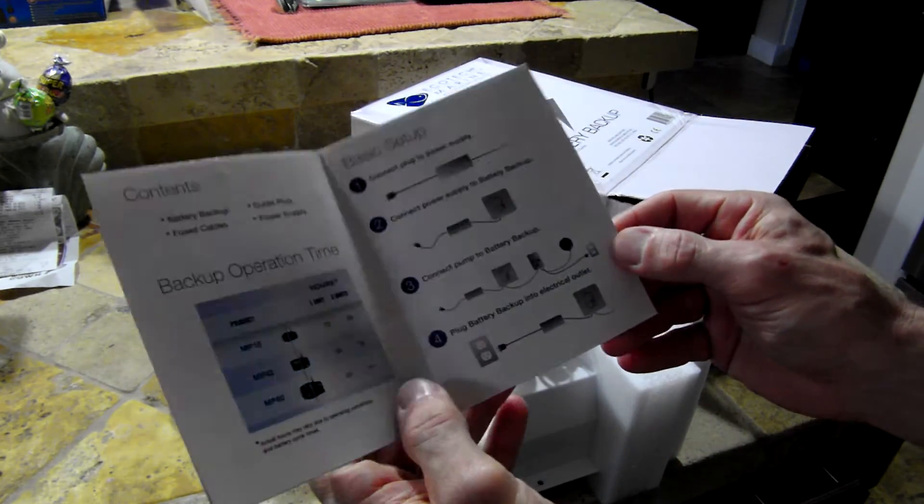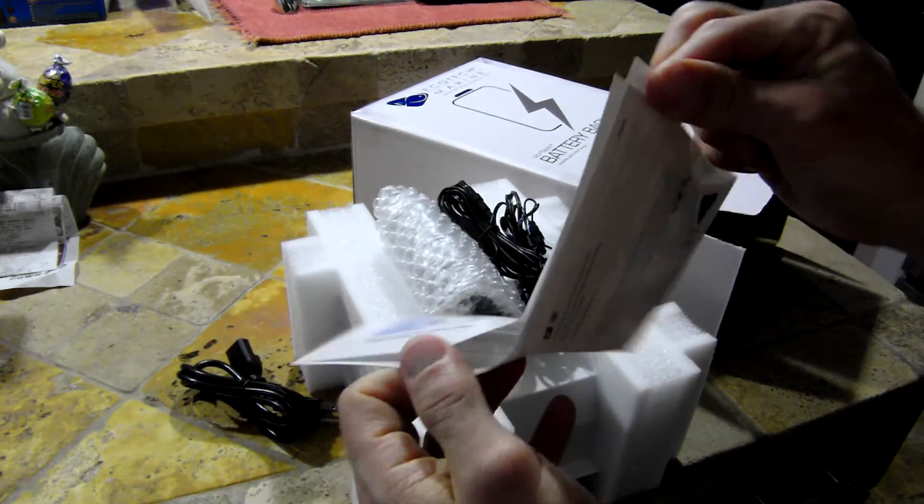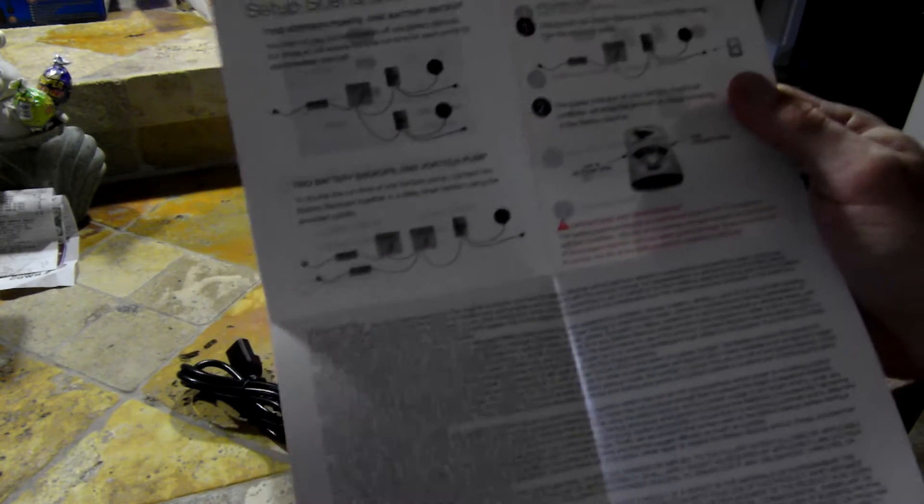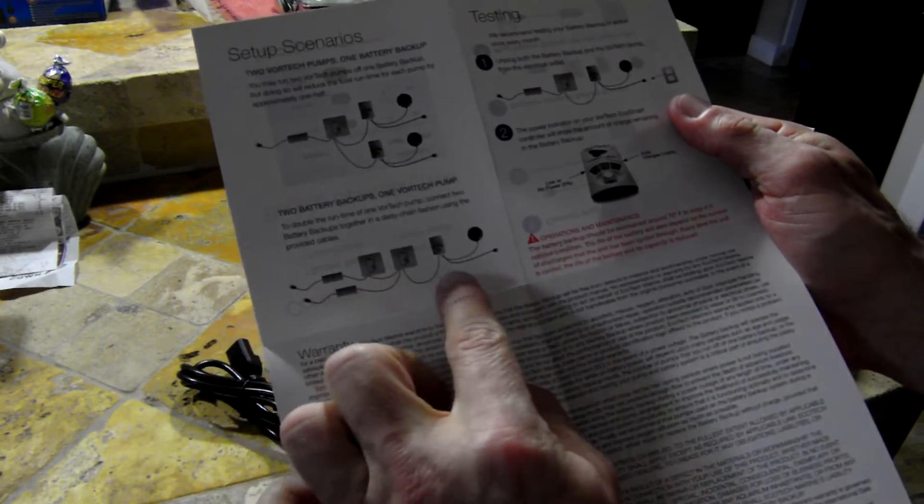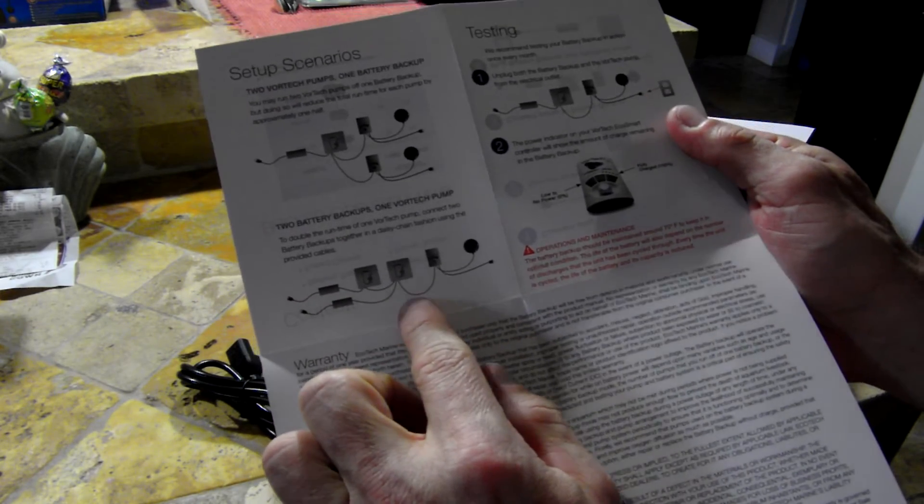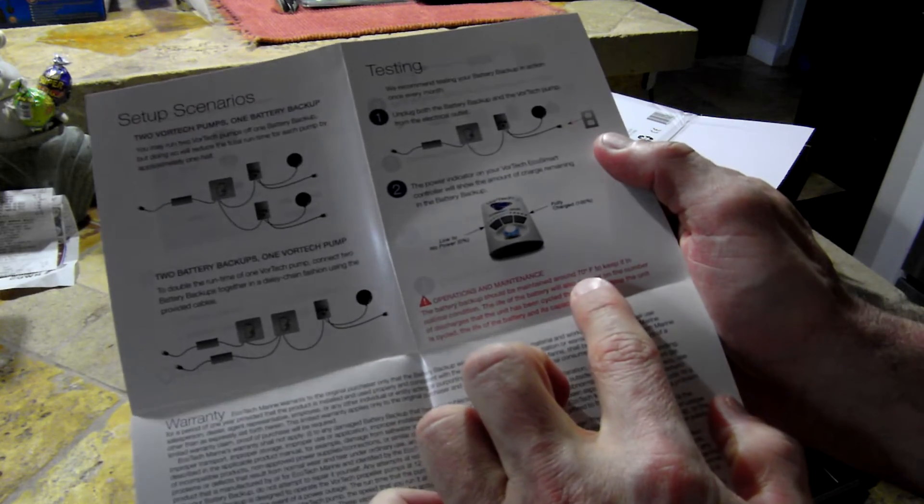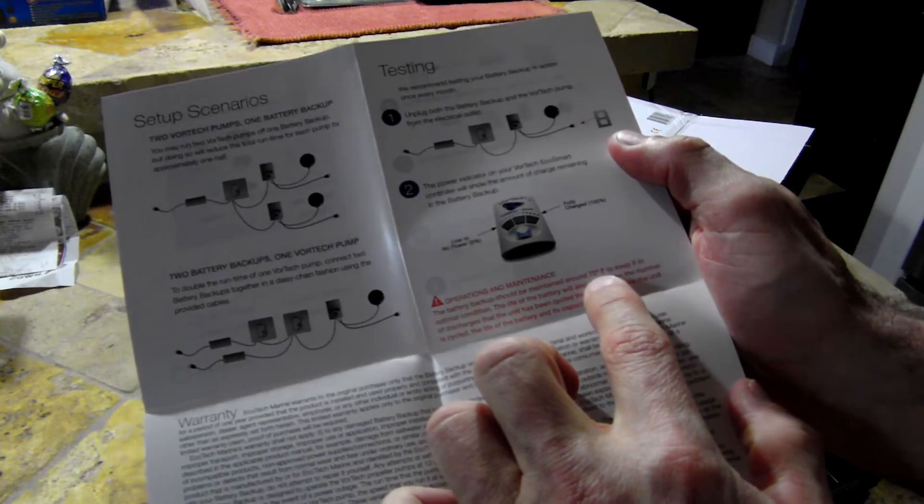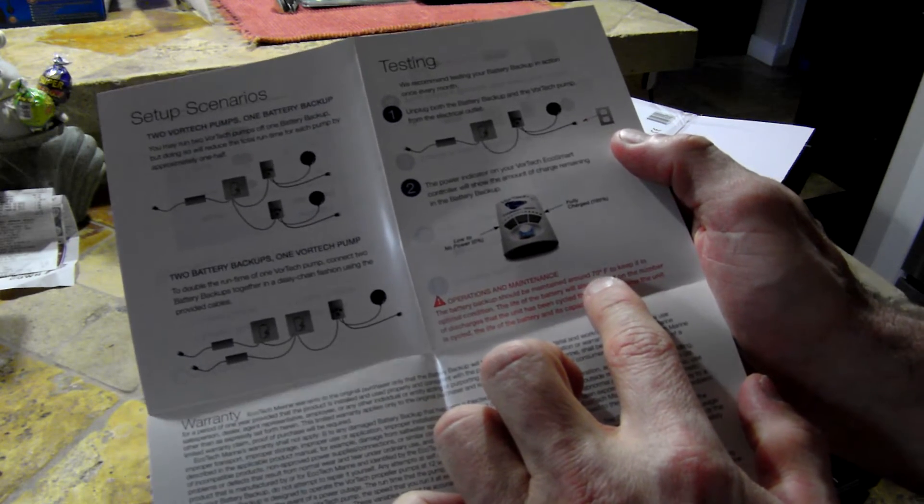Looks like it has some basic setup instructions. You can also daisy chain more than one unit together to give a longer duration of battery backup power. One thing I noticed is that it looks like it recommends having the unit operate at an optimal temperature of 70 degrees, or in an environment within which it's maintained at 70 degrees.